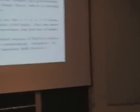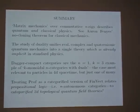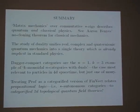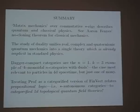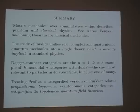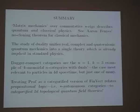In summary: matrix mechanics can be done over any commutative star-rig and can describe both quantum and classical physics. The study of duality combines real, complex, and quaternionic quantum mechanics into a single theory that physicists have already been using, perhaps without noticing it sufficiently. Dagger compact categories are really just a specific case of the k-monoidal n-categories with duals — the one important for particles in 4D spacetime — but there are many other cases to study.